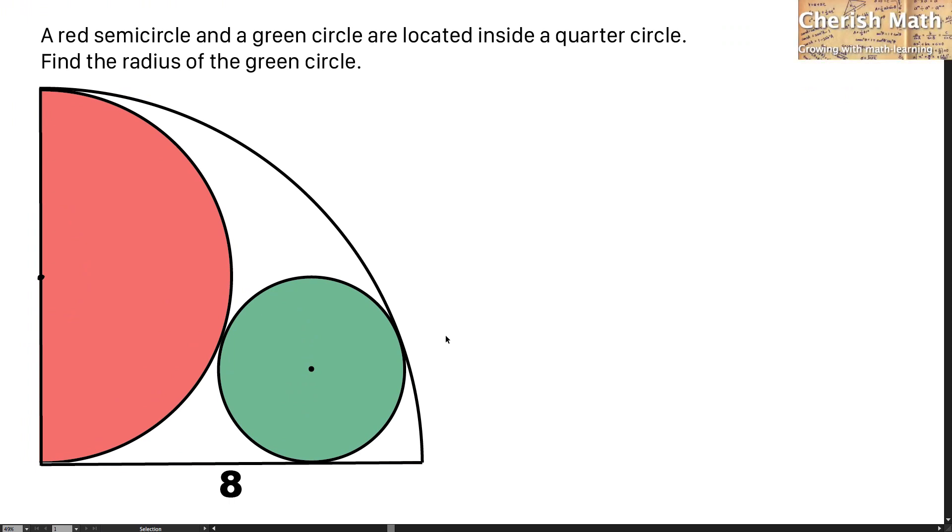Hi from Cherish Math. This is the problem. A red semicircle and a green circle are located inside a quarter circle. Find the radius of the green circle.